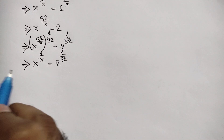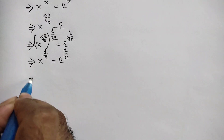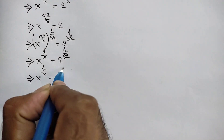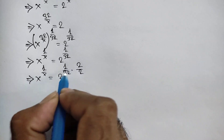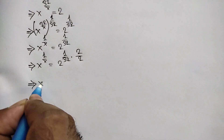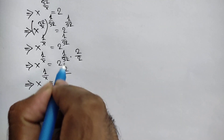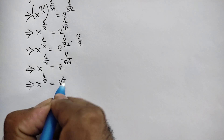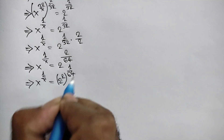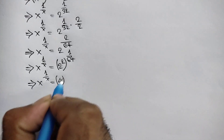Now we try to make the same number here and here. So we can multiply 2 over 2. So we can write x to the power 1 over x is equal to 2 to the power 1 over 32 times 2 over 2. So x to the power 1 over x is equal to 2 to the power 2 over 64, which equals 2 to the power 1 over 32 times 2 to the power 1 over 64. Or x to the power 1 over x is equal to 2 squared, that means 4, to the power 1 over 64.